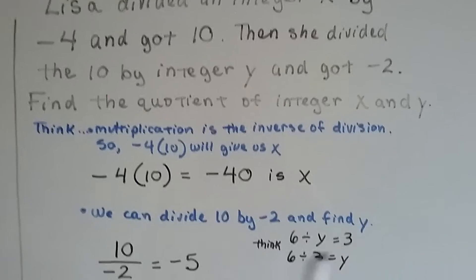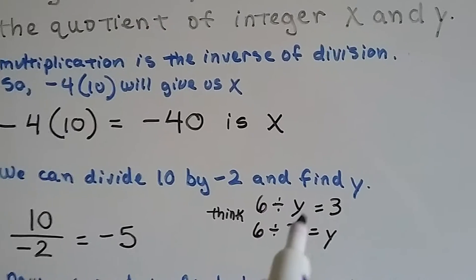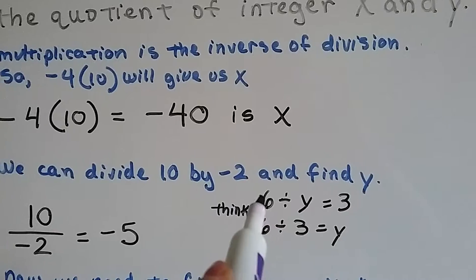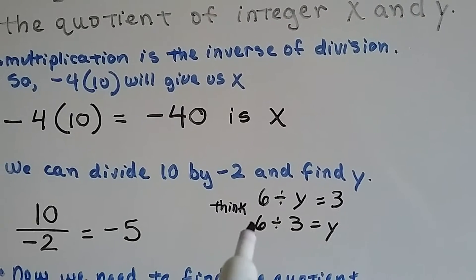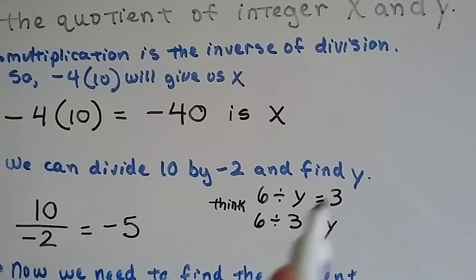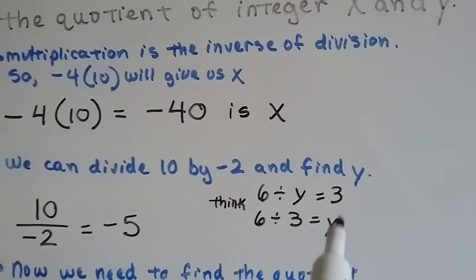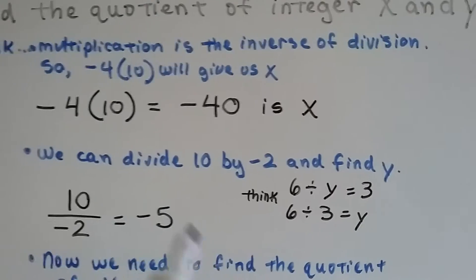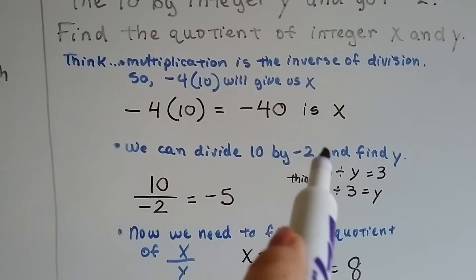Now it says she divided 10 by integer y and got a negative 2. Well, we can divide 10 by the negative 2 and find y. Think about this: if it said 6 divided by y equals 3, we know that 6 divided by 2 equals 3. We can switch these around. 6 divided by 3 is going to equal 2, so that would be the y.